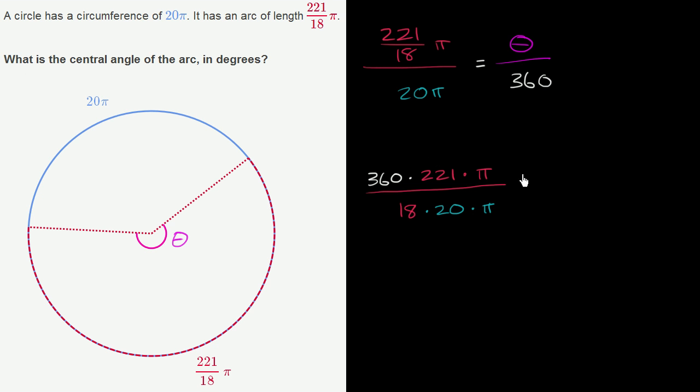And on the right-hand side, if we multiply it by 360, we are just left with theta. We are just left with theta. So we really just have to simplify this now.